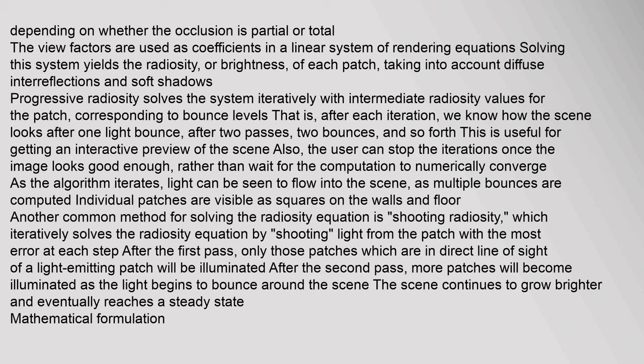Solving this system yields the radiosity or brightness of each patch, taking into account diffuse interreflections and soft shadows. Progressive radiosity solves the system iteratively with intermediate radiosity values for each patch corresponding to bounce levels — that is, after each iteration we know how the scene looks after one light bounce, after two passes two bounces, and so forth. This is useful for getting an interactive preview of the scene; the user can stop iterations once the image looks good enough rather than wait for the computation to numerically converge.